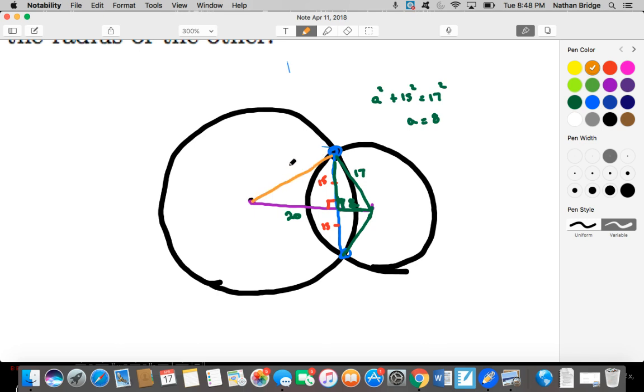And we needed to find this missing radius. I'll call it C. And now we have all the tools to do so. In fact, we have a right triangle. We have one leg is 15, the other leg is 20. So we have a Pythagorean theorem situation.